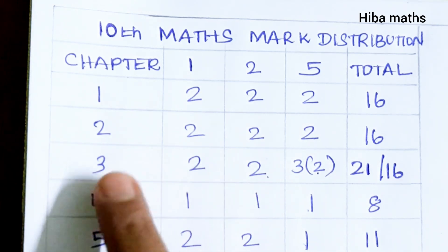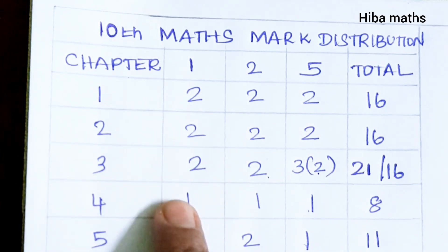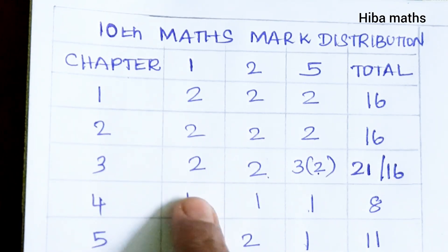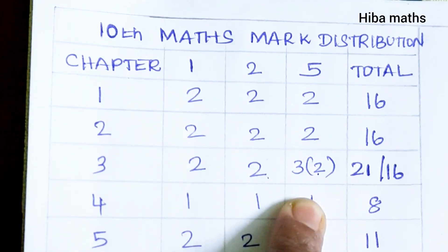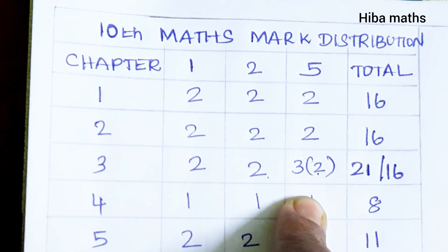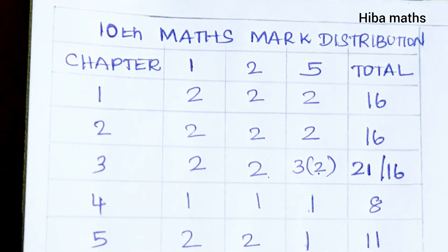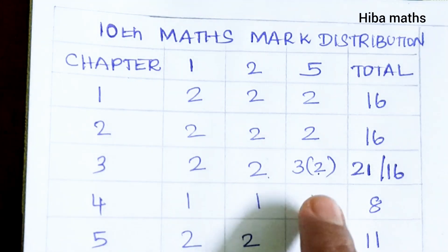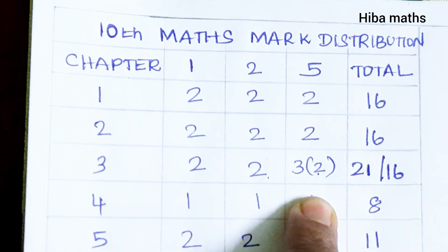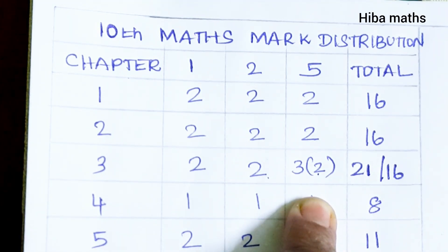In the third chapter, there are 2 one-mark questions, 2 two-mark questions, and 3 five-mark questions. In the matrix, there is a 5-mark question. For the balance, focus on alpha, beta, square root, and factorization. The first exercise covers the elimination method.